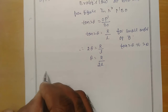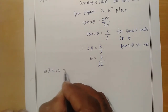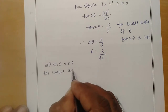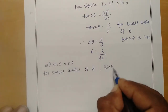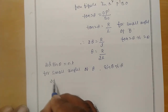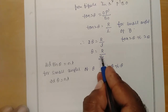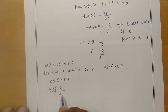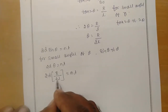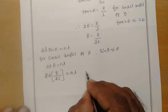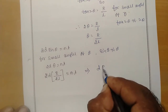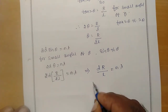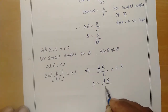From Bragg's law, 2d sinθ = nλ. For small angles, sinθ ≈ θ, so 2dθ = nλ. Substituting θ = r/(2L): 2d × r/(2L) = nλ, the 2s cancel, giving dR/L = nλ, or rearranging: λ = dR / (nL). This is the expression for the wavelength of the de Broglie waves associated with the electron accelerated through a certain potential difference.